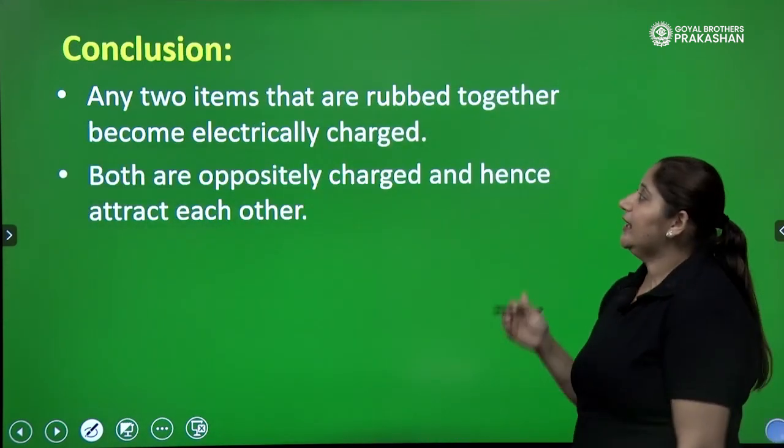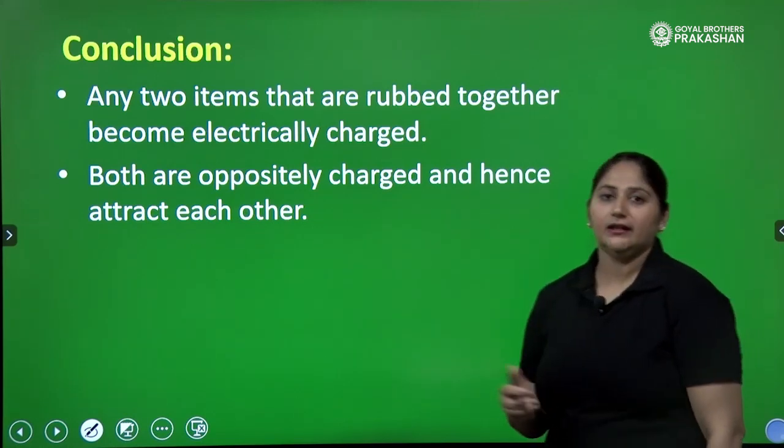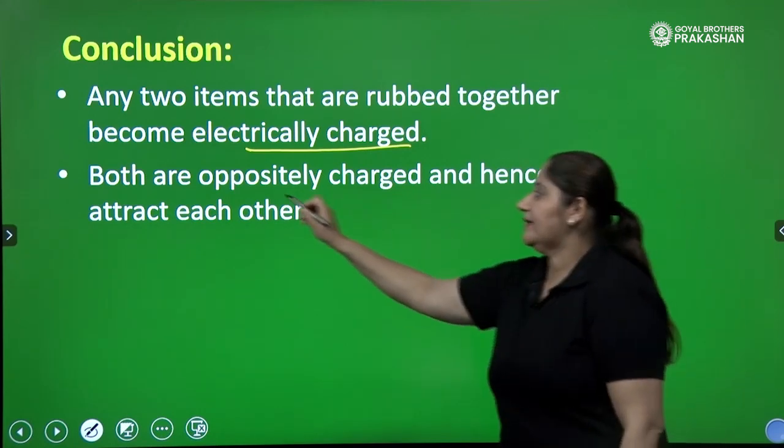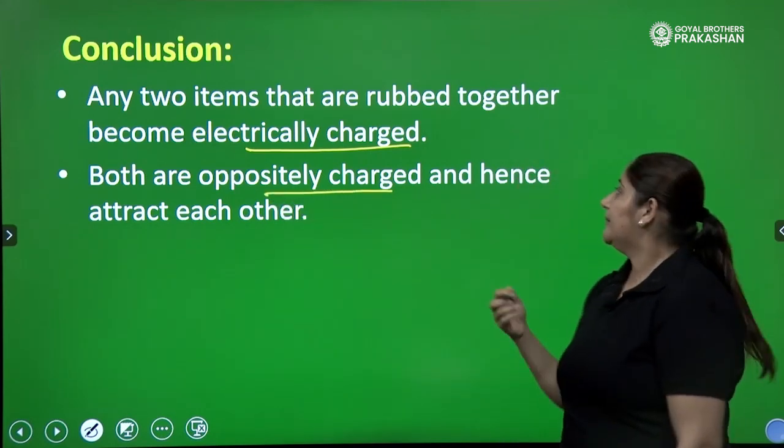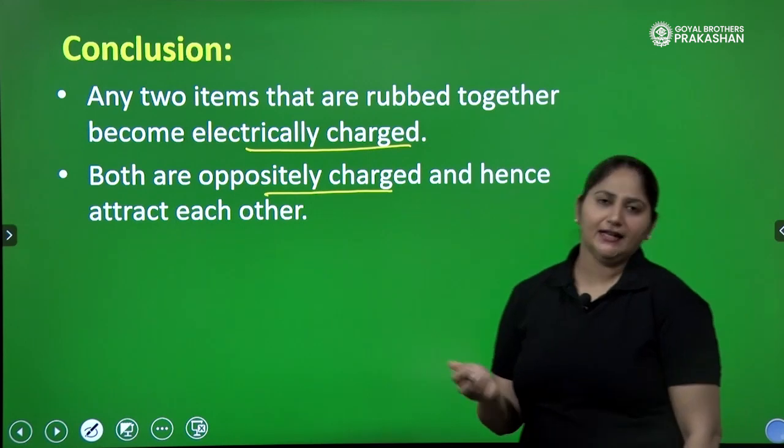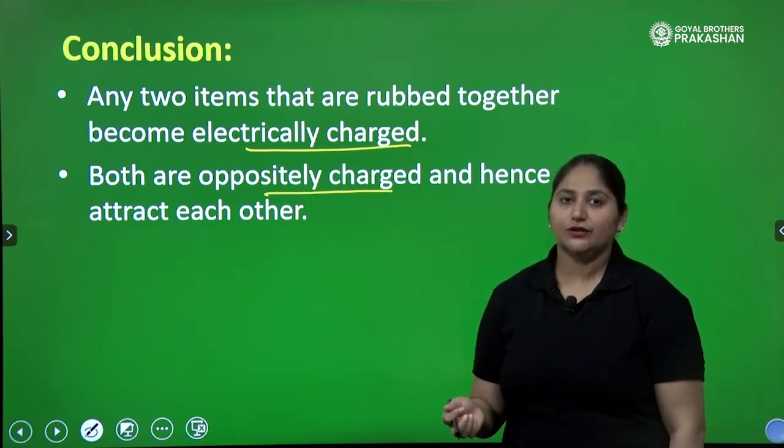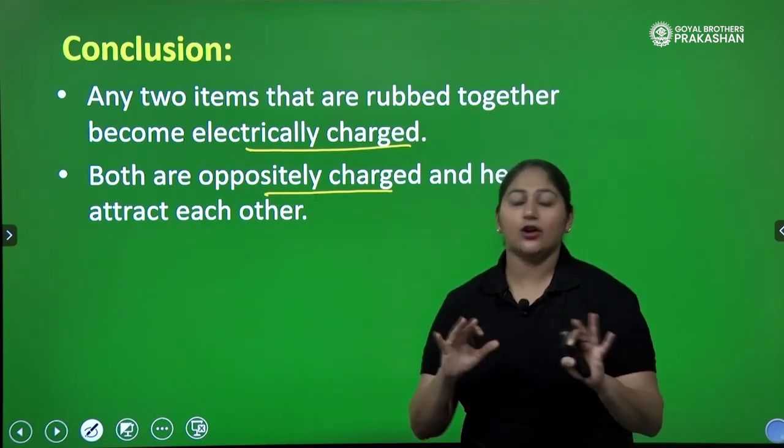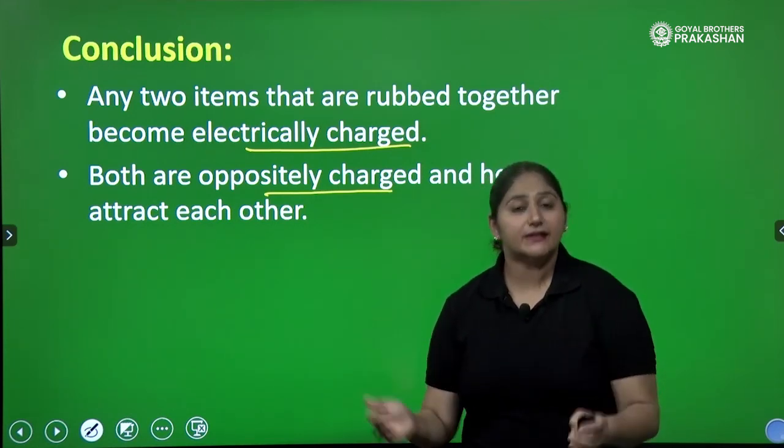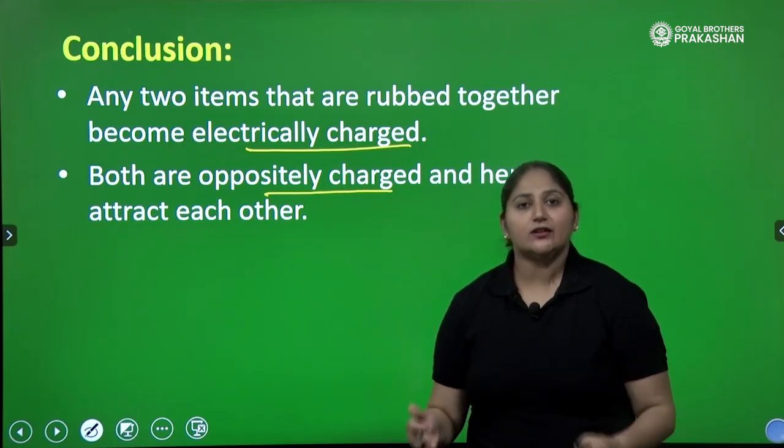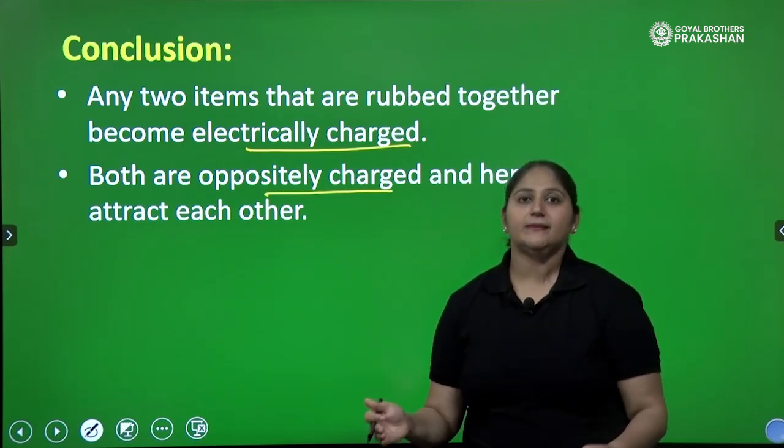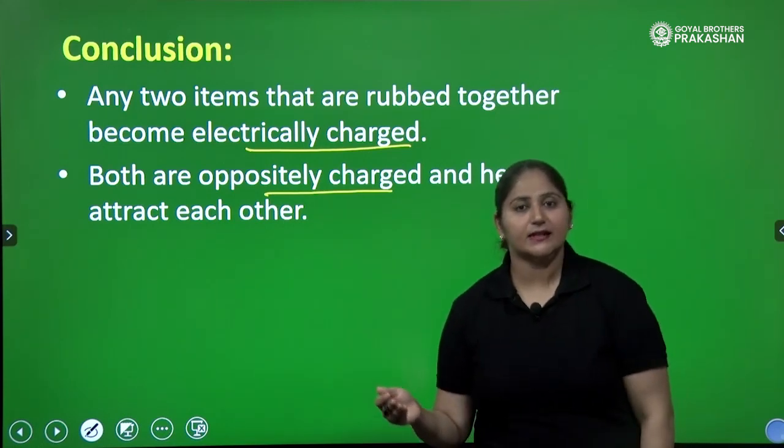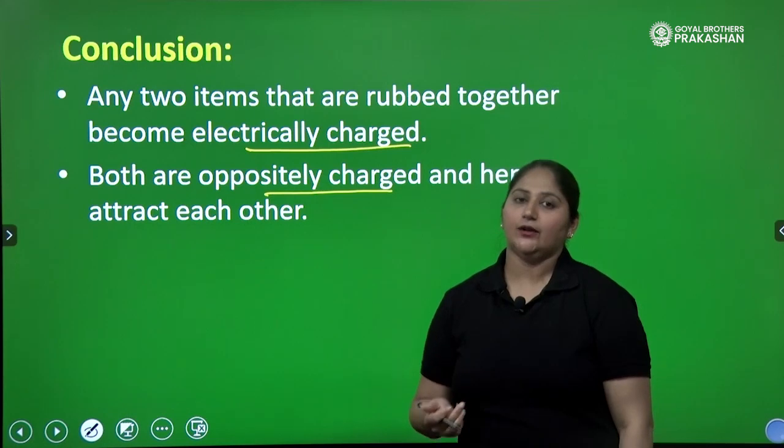What are the conclusions? Any two items that are rubbed together become electrically charged. Both are oppositely charged. That is why I said unlike charges, because unlike charges attract each other. I hope you have understood that the atoms are divisible. They are not indivisible. We can further categorize or classify the particles of atoms as electron, proton and neutron that we will be discussing in the next video.